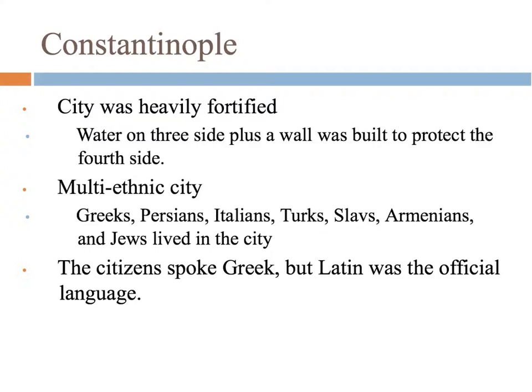From that source, you should have gotten that Constantine really intended Constantinople to be a magnificent city — something that could compare to Rome, which had been considered the greatest city in the world by people living in this region. Constantinople was heavily fortified. Like we talked about with the map, it's surrounded by water on three sides — it's out on a little peninsula — and then they built very heavy city walls to protect the rest of it. So it was a really good center of defense.